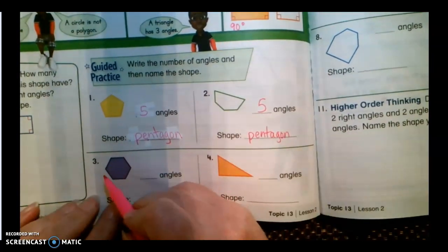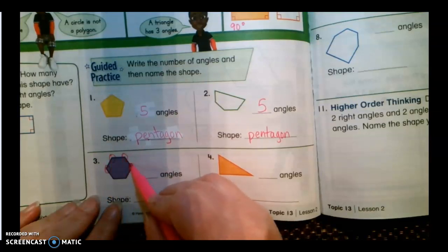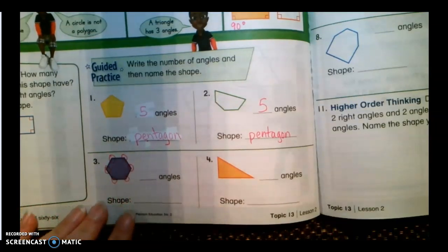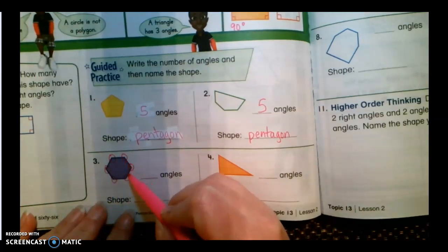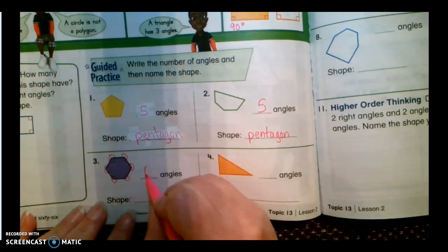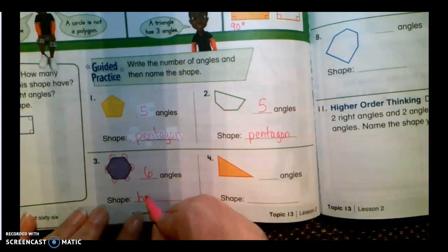Let's look at this next shape. One, two, three, four, five, six angles. And it's going to have one, two, three, four, five, six edges also. If it has six angles and six edges, what shape is this? This is called a hexagon.